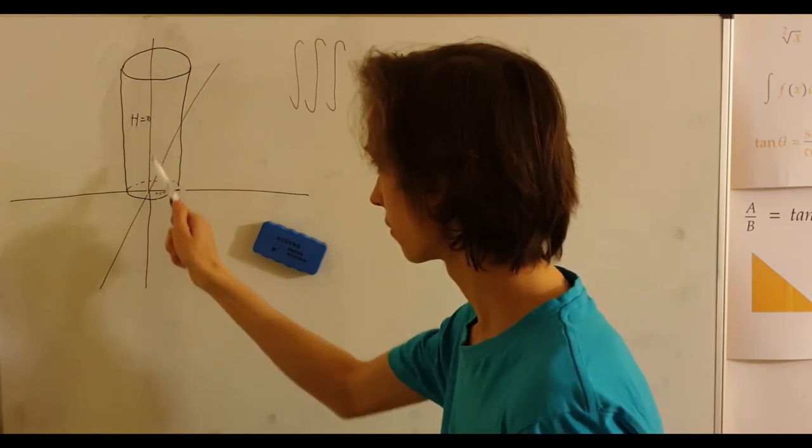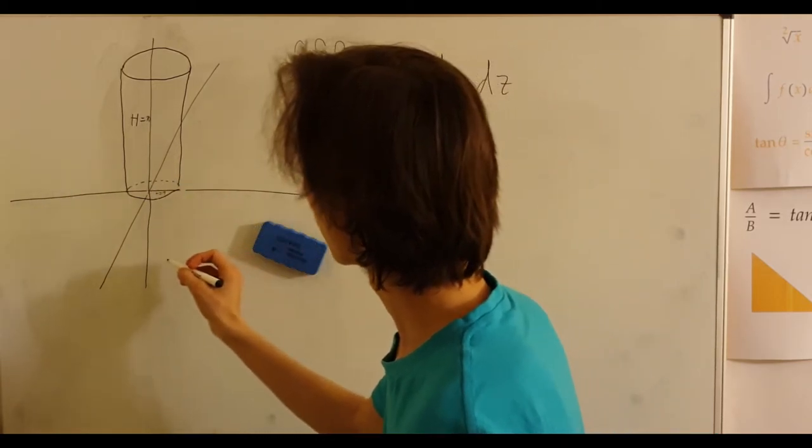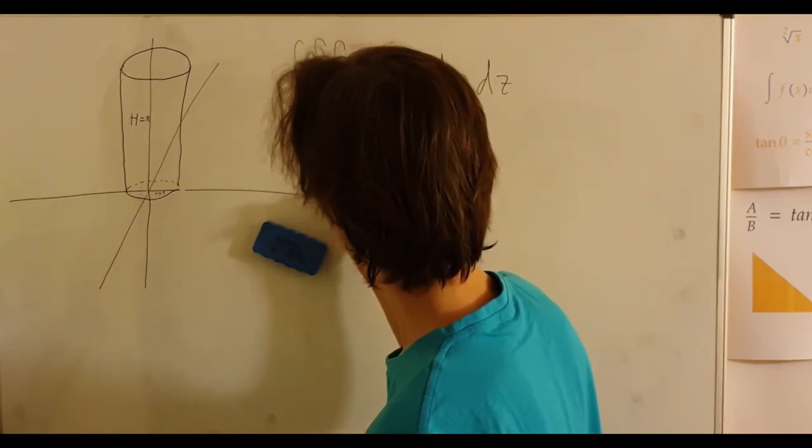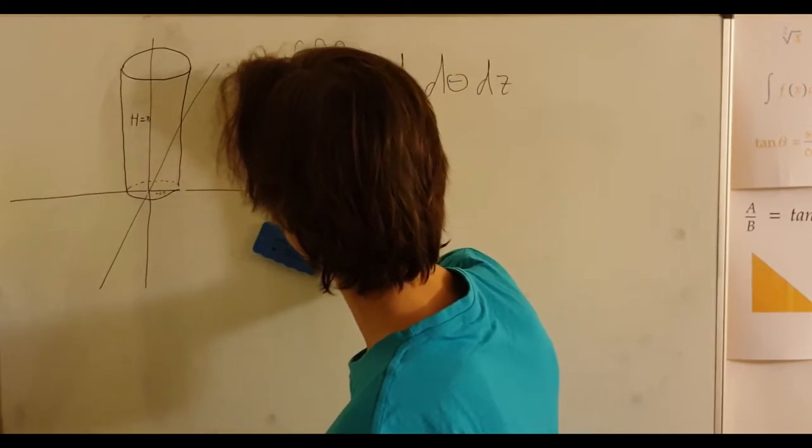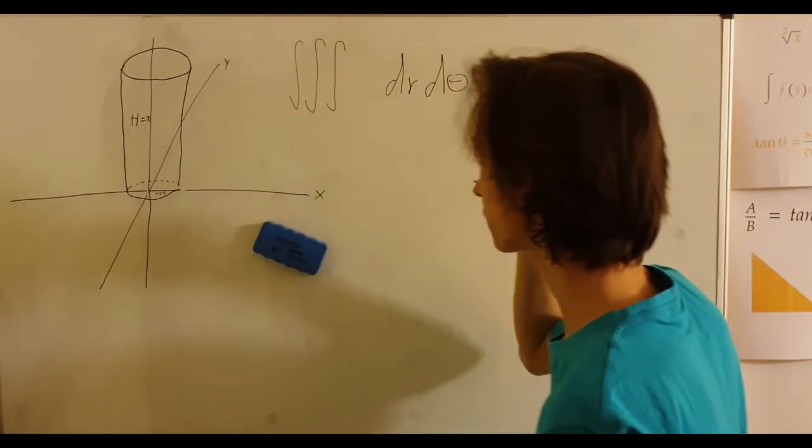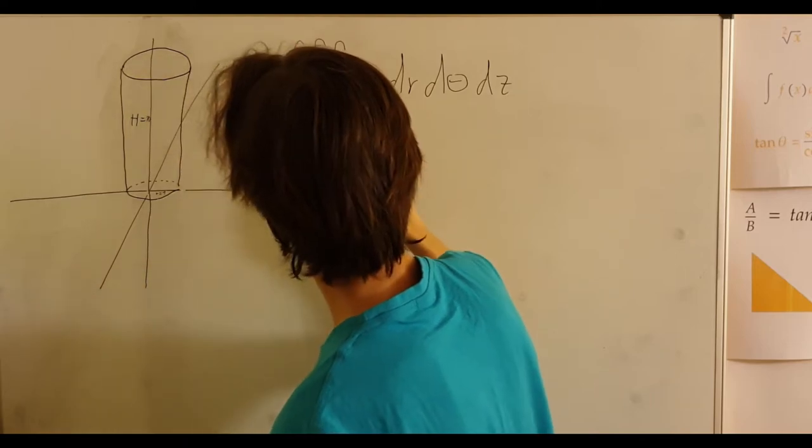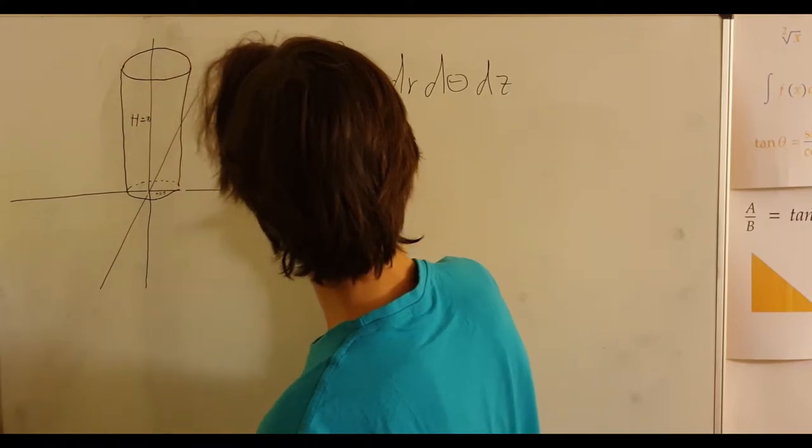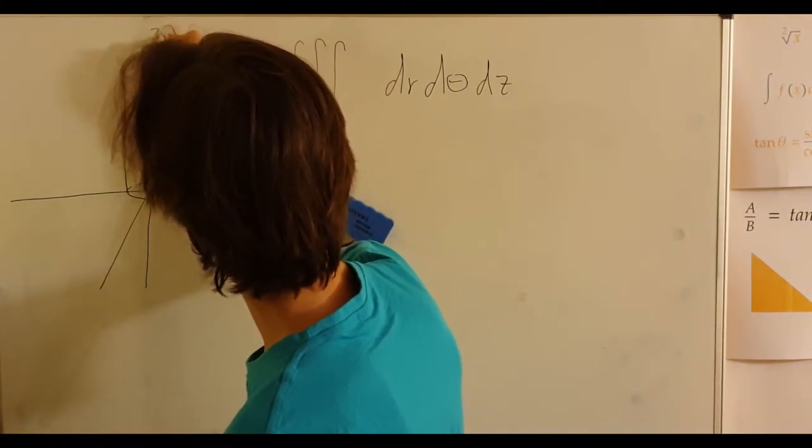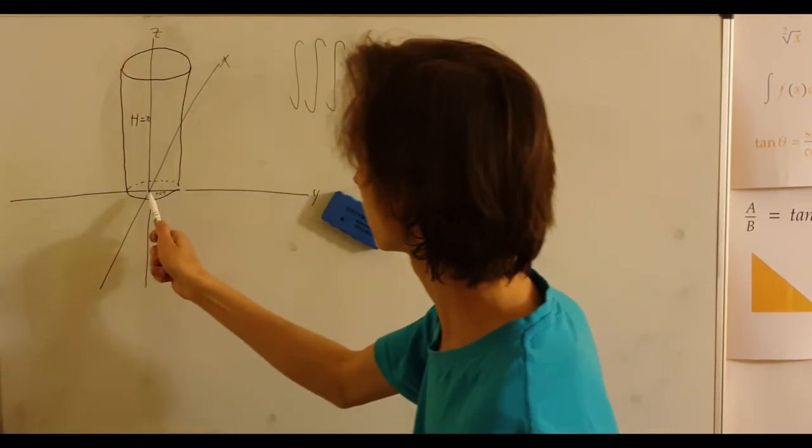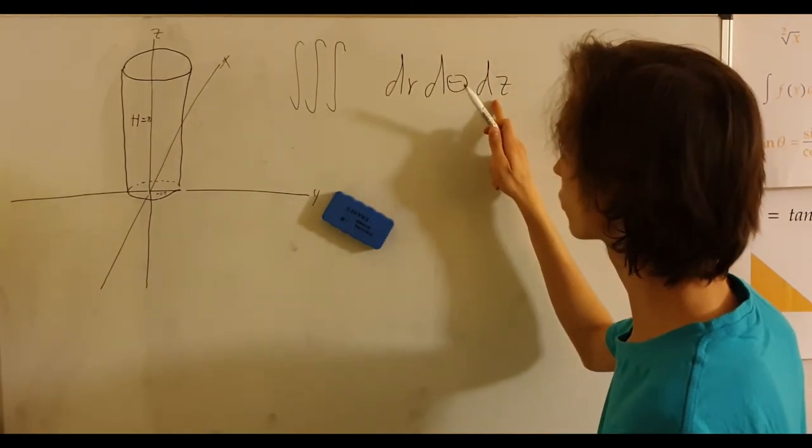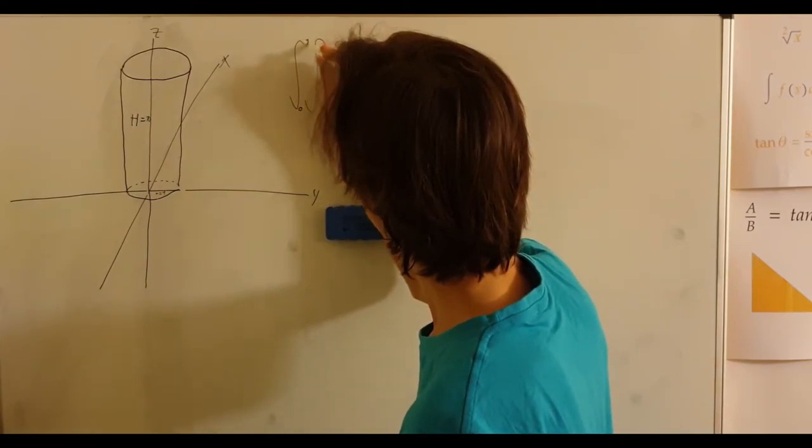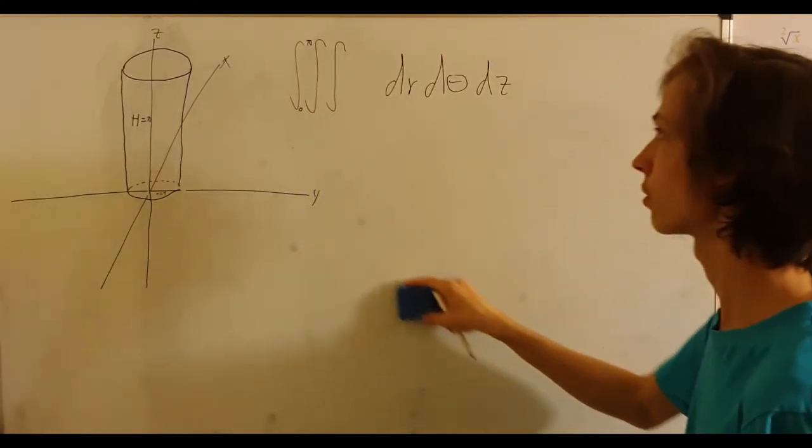The height is 10, and from 0 to 10, this is the x-axis, this is the y-axis, and z-axis. This is from 0 to 10 on the z-axis. So from the most outer one, the bound will be from 0 to 10.